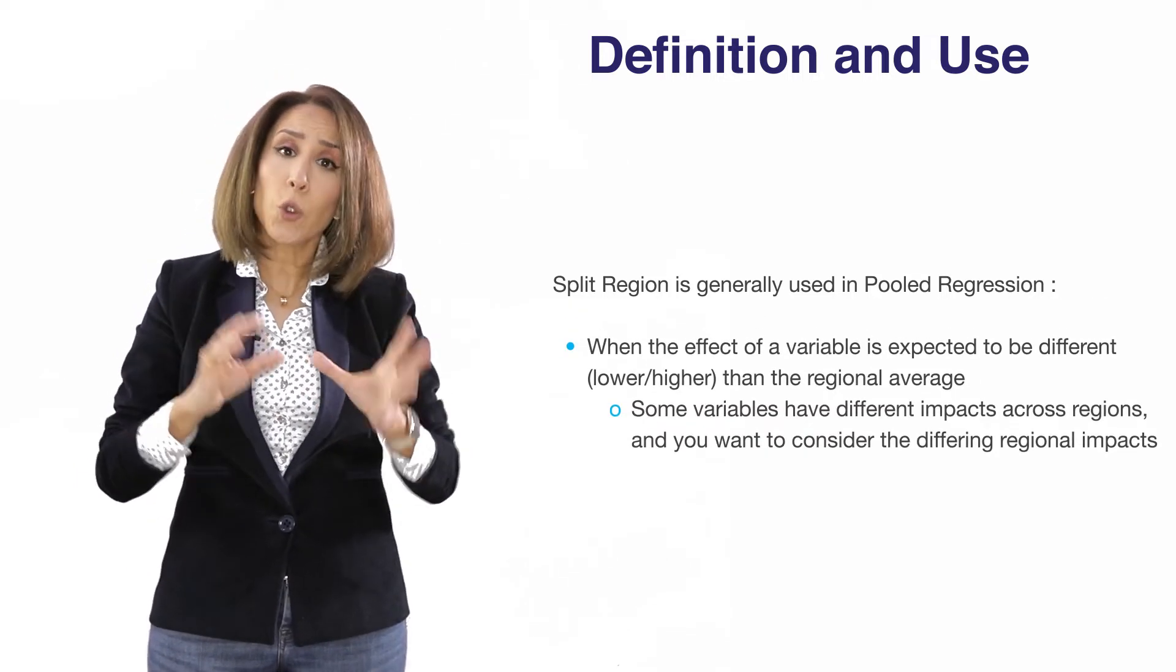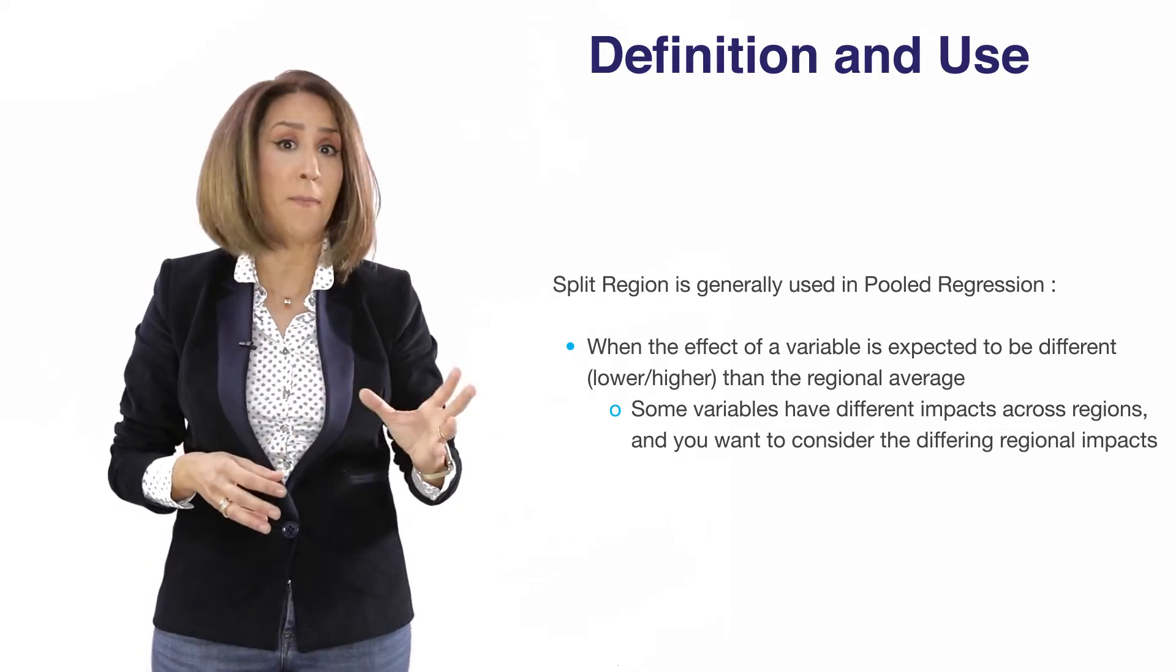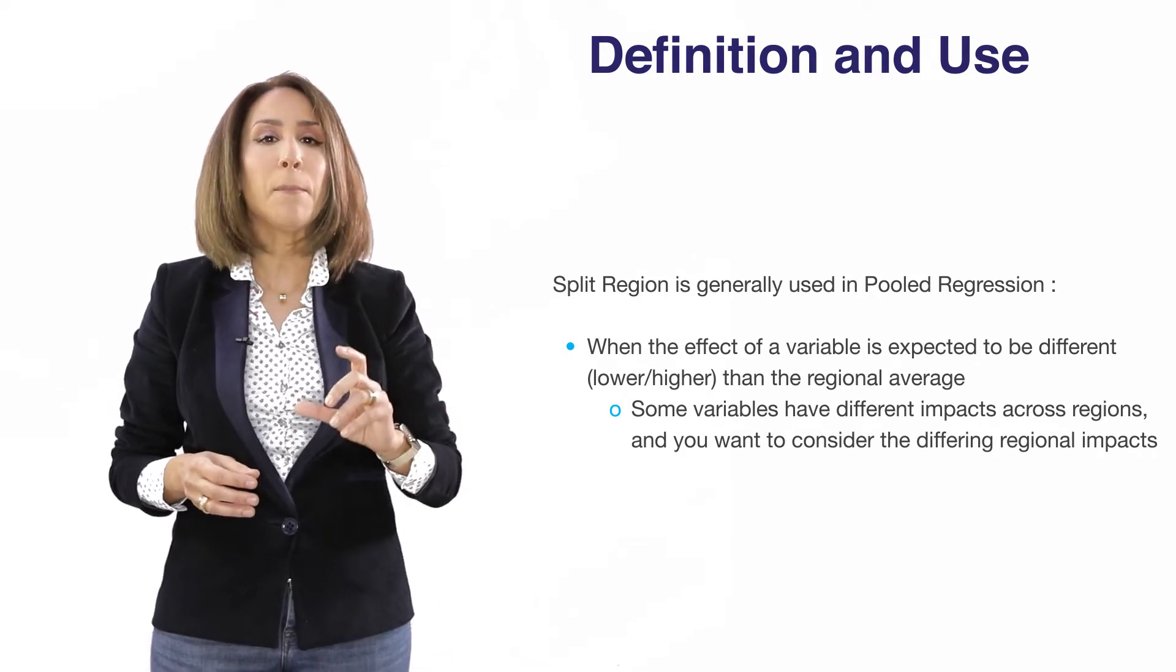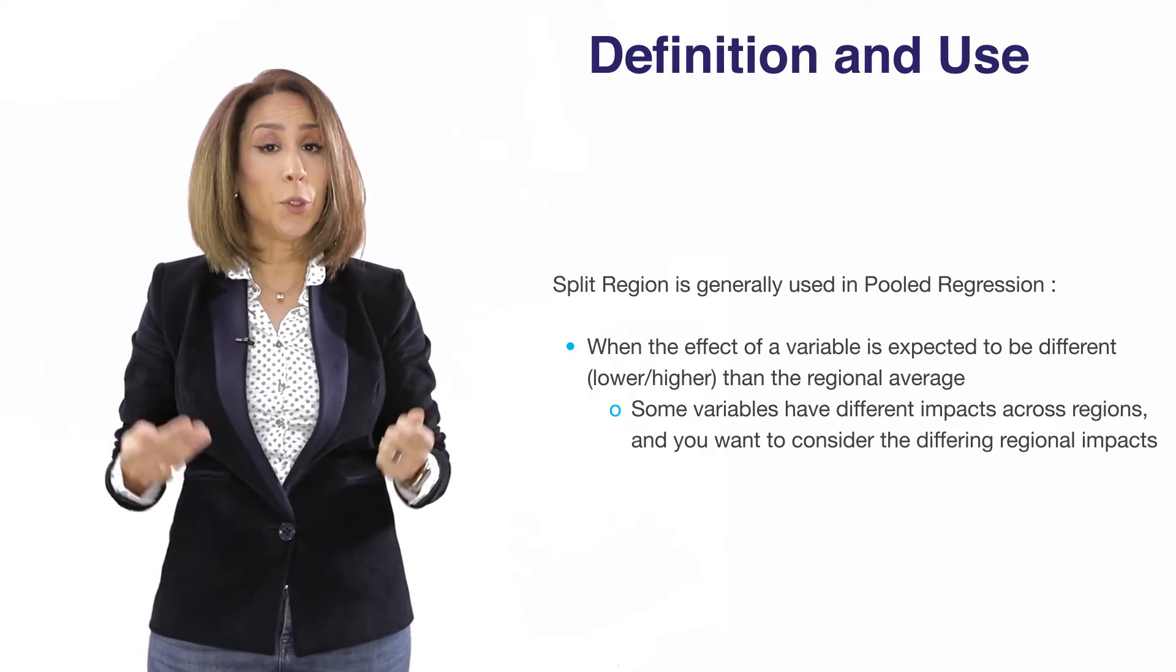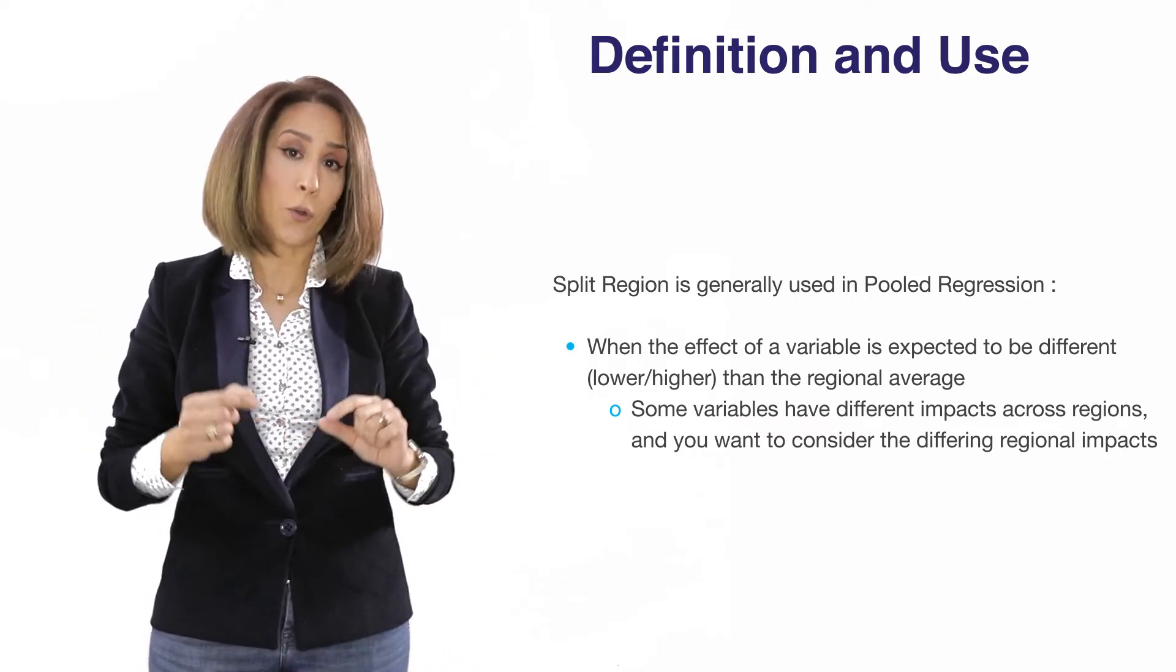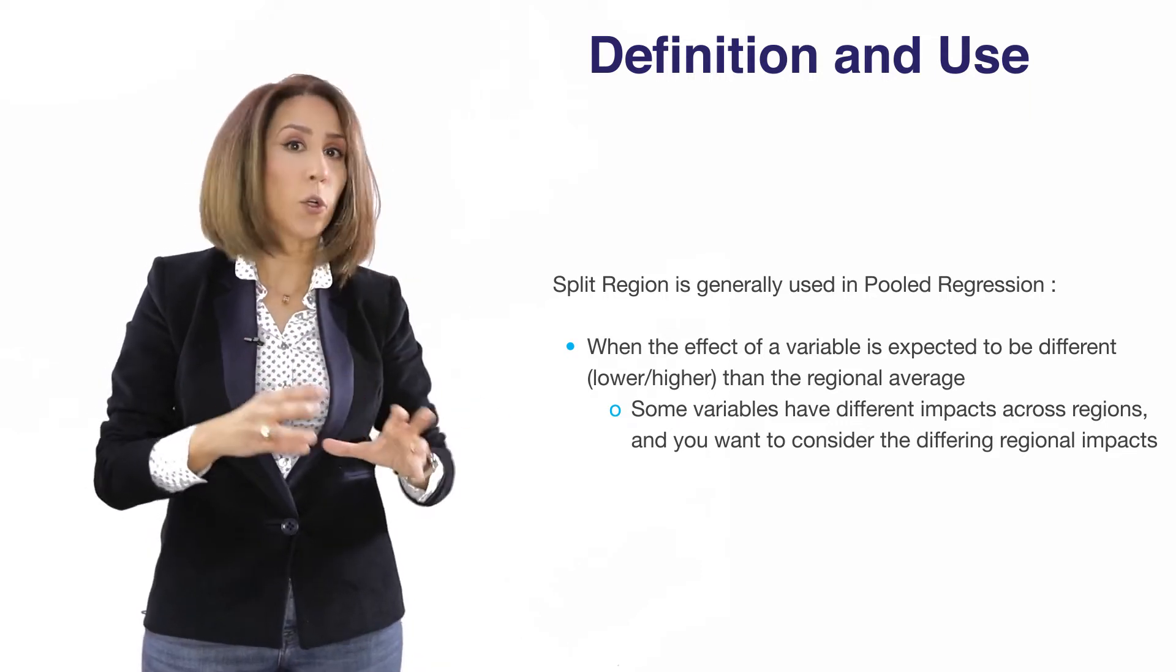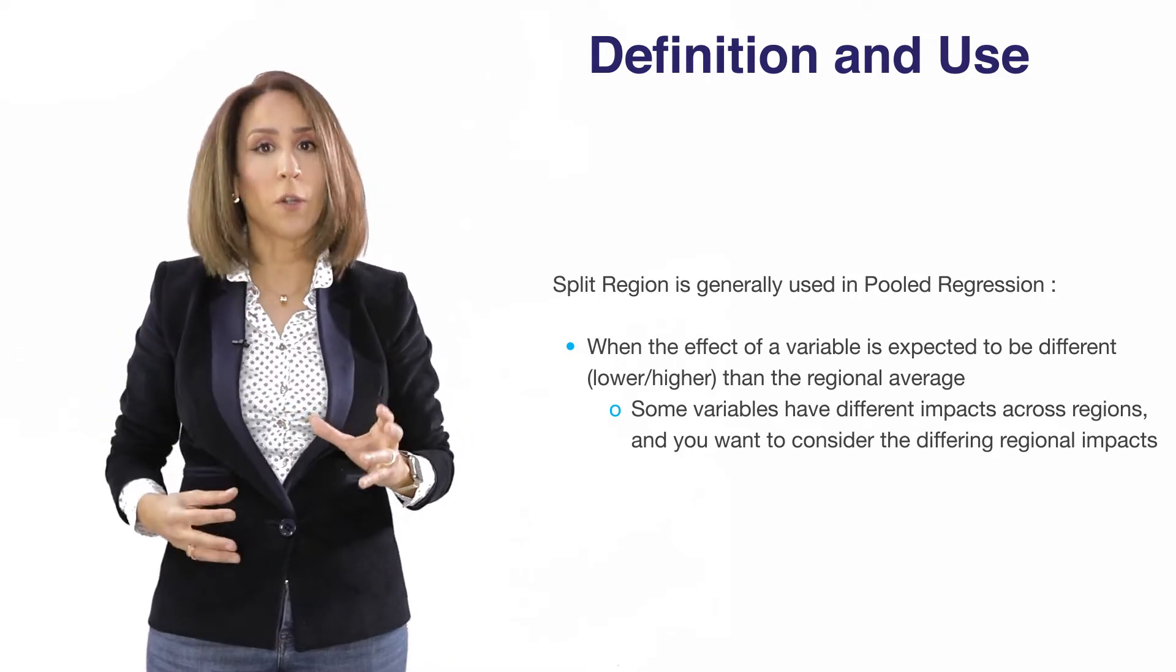And we suspect that certain cross sections of the data, for example certain DMAs or certain stores, could have a different impact than the regional average. In that context, what you would need to do is to apply the split processor or the split by region processor in order to allow certain regions or certain DMAs to have different coefficients than the regional average.